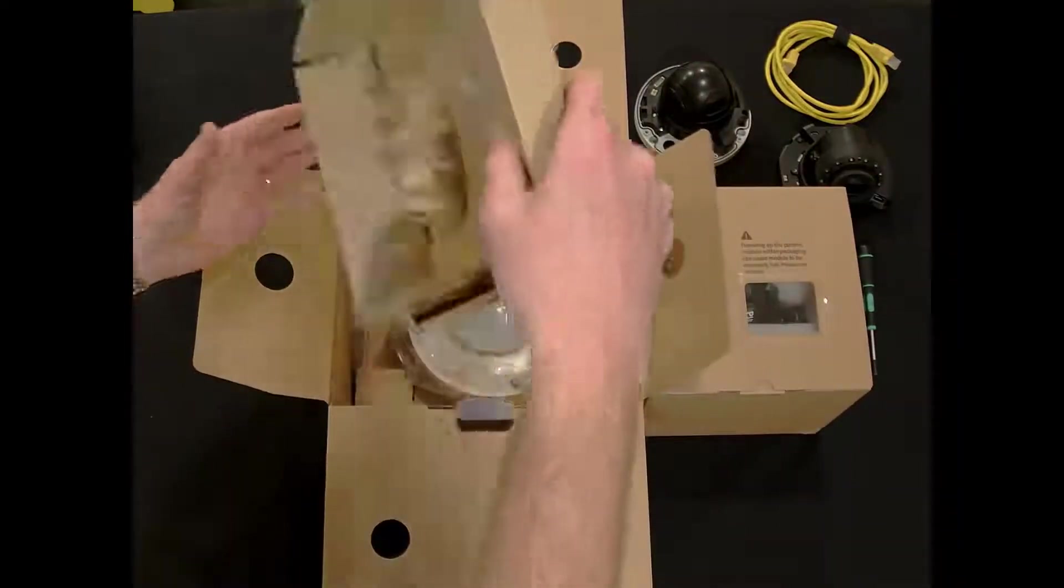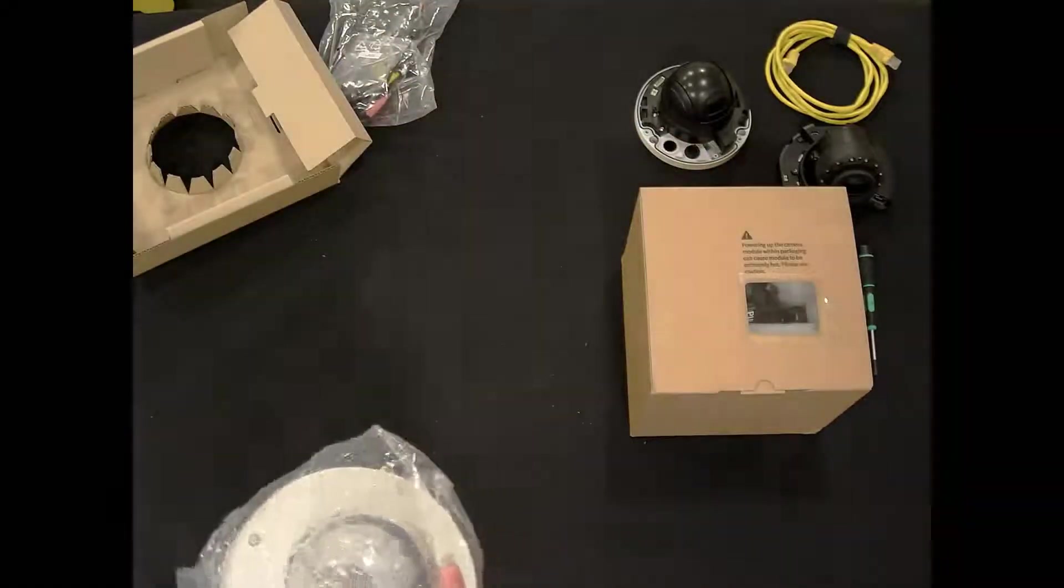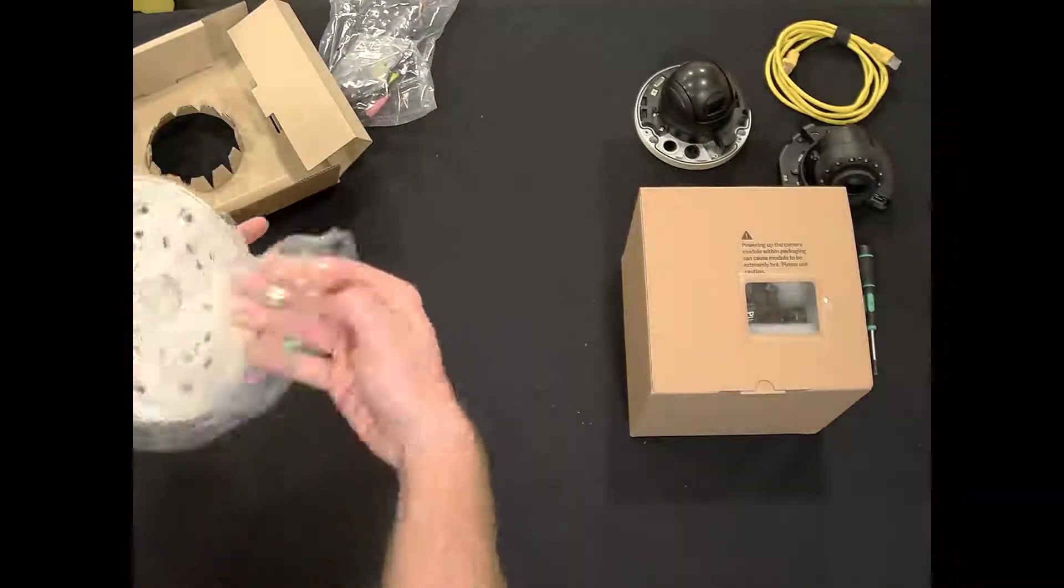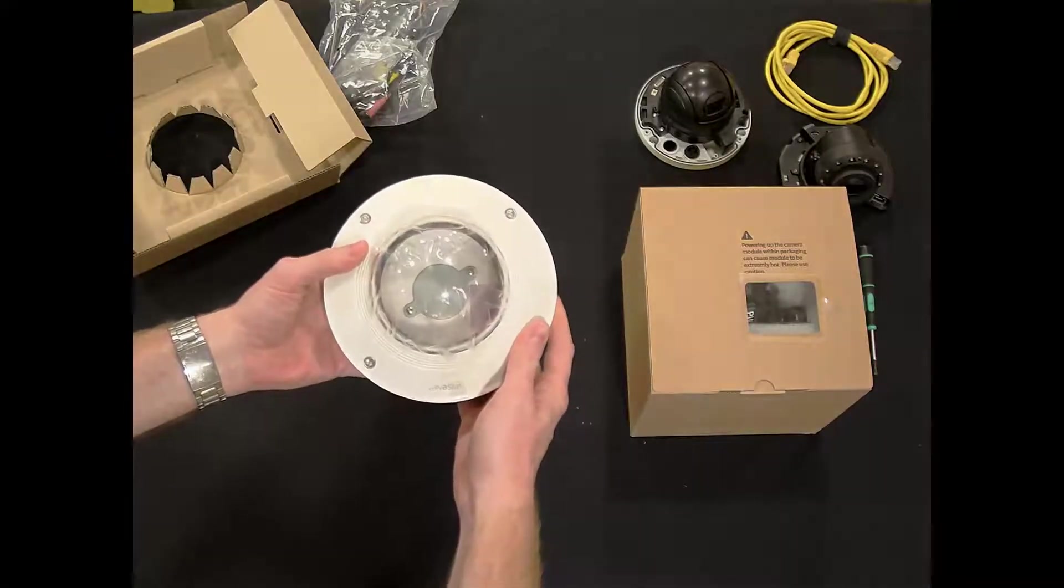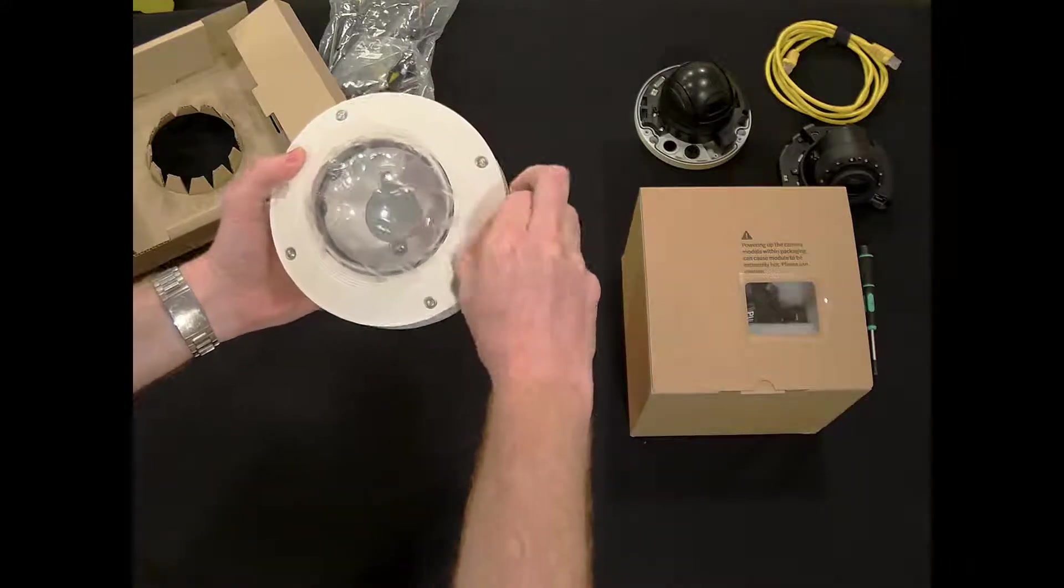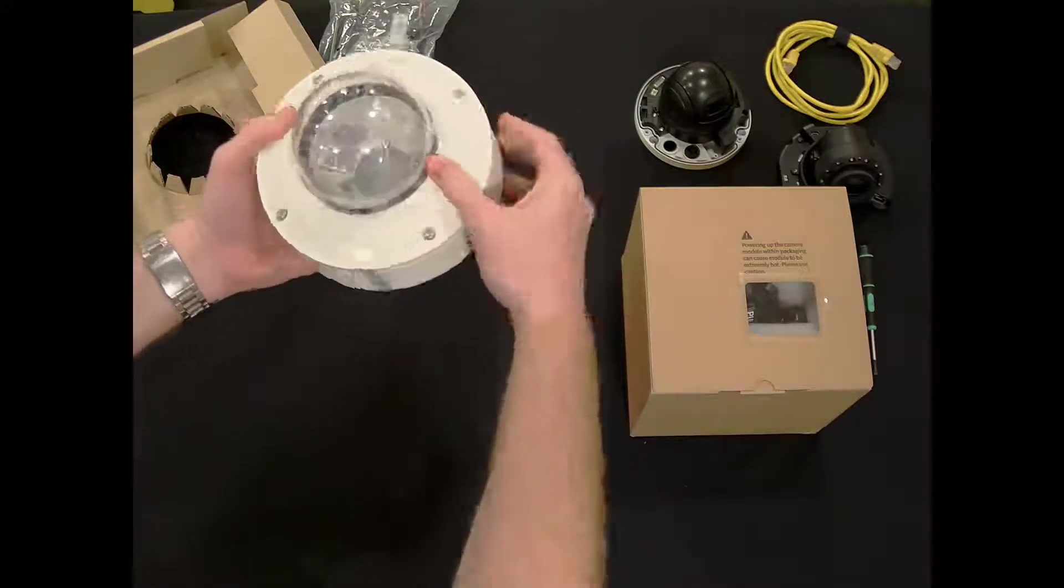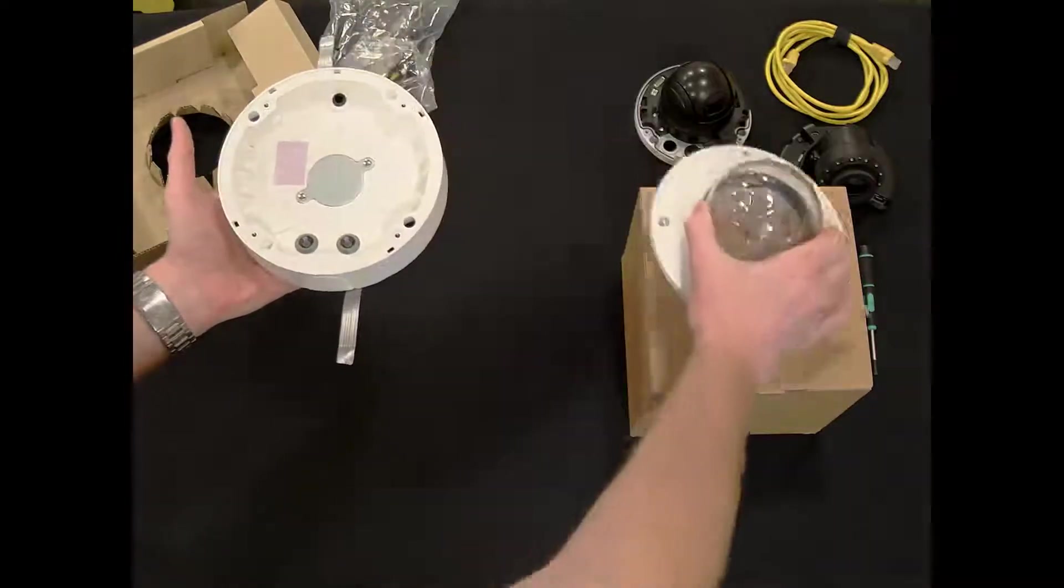Here is the camera case itself. And one great feature right from here is that we don't need a screwdriver to take the cover off. There's tape. We can peel back the tape, and the dome cover comes off just like that.